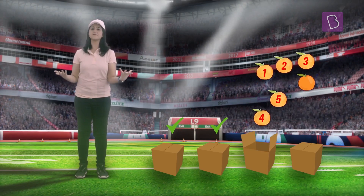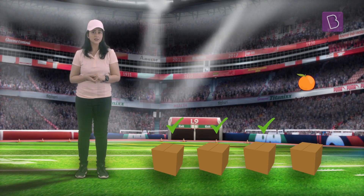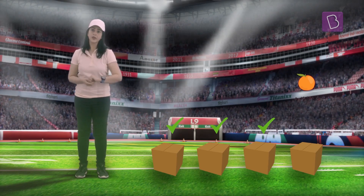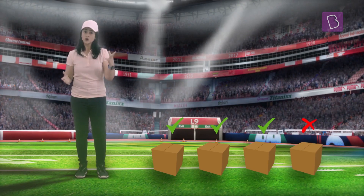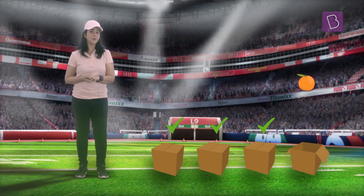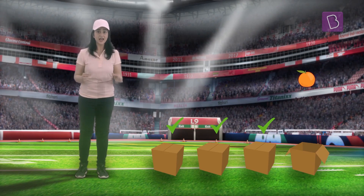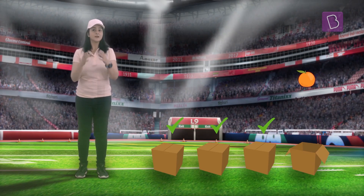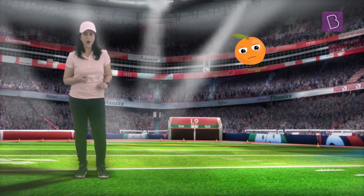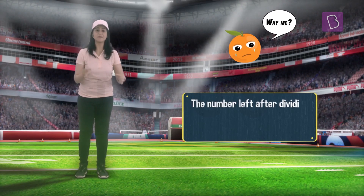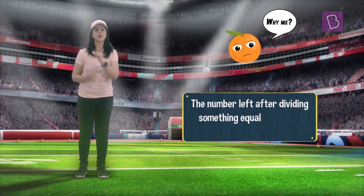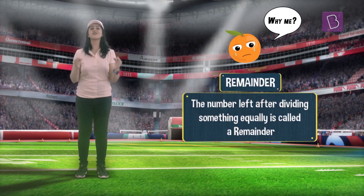We take five more oranges and form the third box. Now you are left with only one orange. This time it's neither zero nor sufficient to pack another box, because to pack another box you need five oranges — that is four more. So this one orange here is leftover. There is a special name for this leftover number — it's called the remainder.